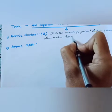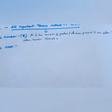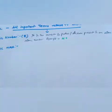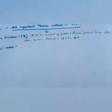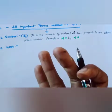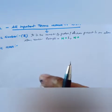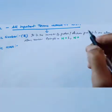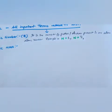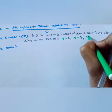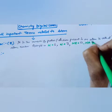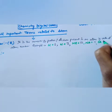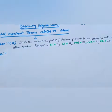For example, hydrogen has one proton, so its atomic number is 1. The atomic number of nitrogen is 7 — you can count: hydrogen, helium, lithium, beryllium, boron, carbon, nitrogen — so nitrogen is 7. Neon's atomic number is 10, sodium is 11, and calcium's atomic number is 20.